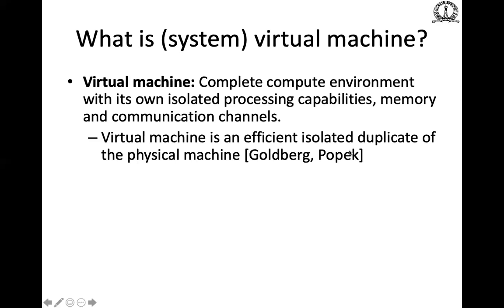Let's first understand what a system virtual machine is. There are different kinds of virtual machines — for example, language virtual machines used to run Java — but here we are concerned with system virtualization. A system virtual machine is a complete computing environment with an OS, isolated processing capabilities, memory, and communication channels. We set up a machine with its own notion of a processor, memory, and I/O channels.